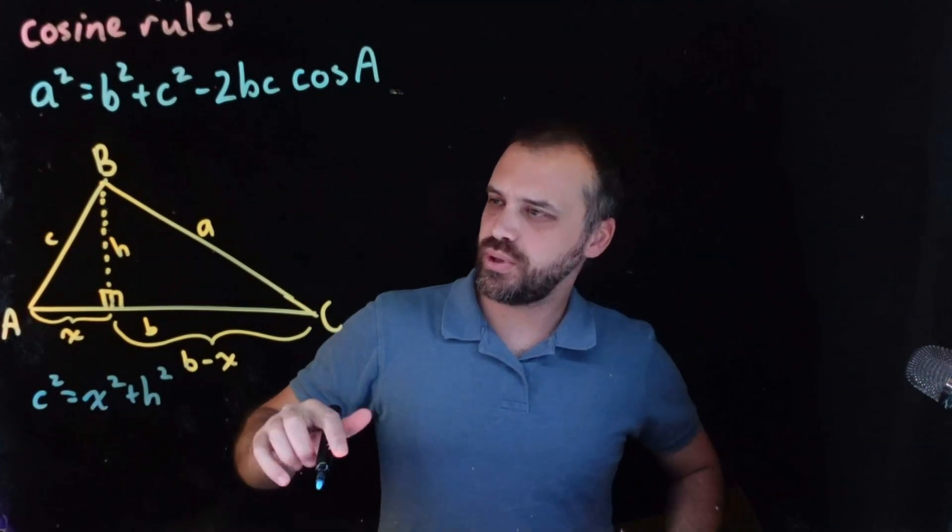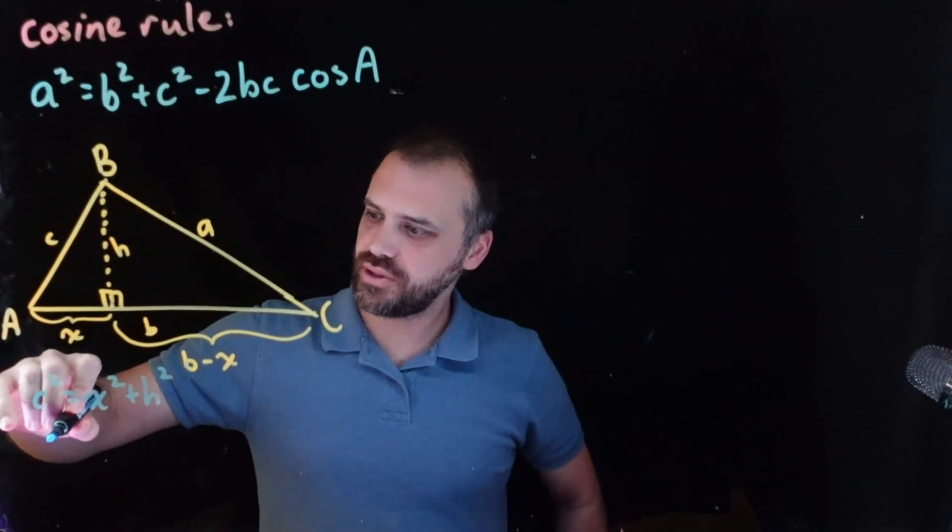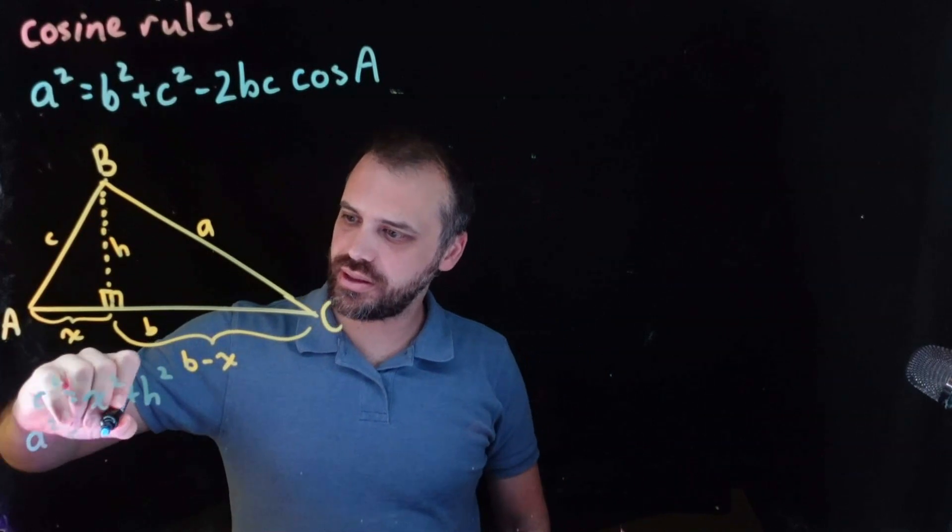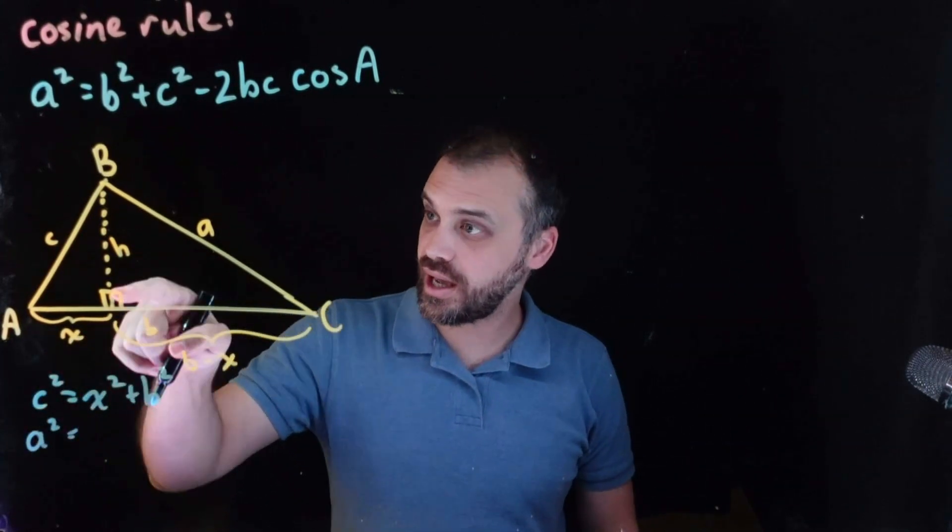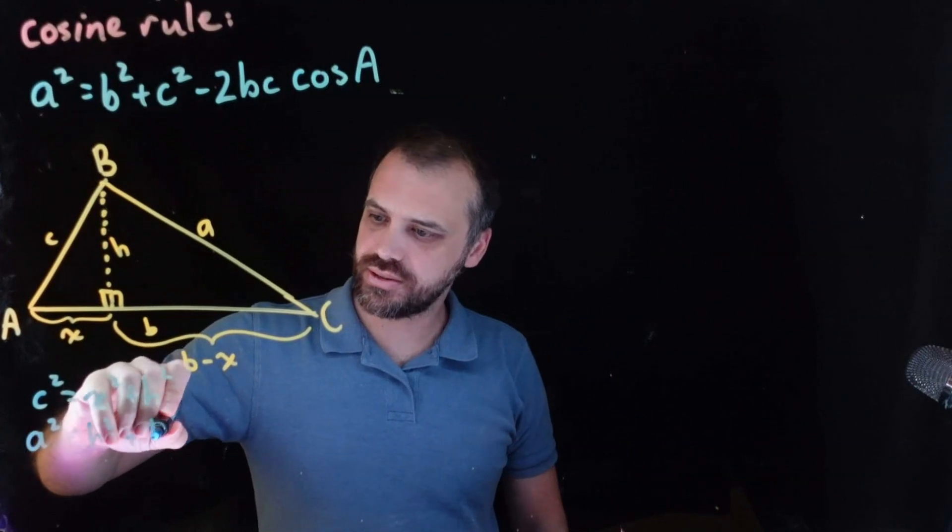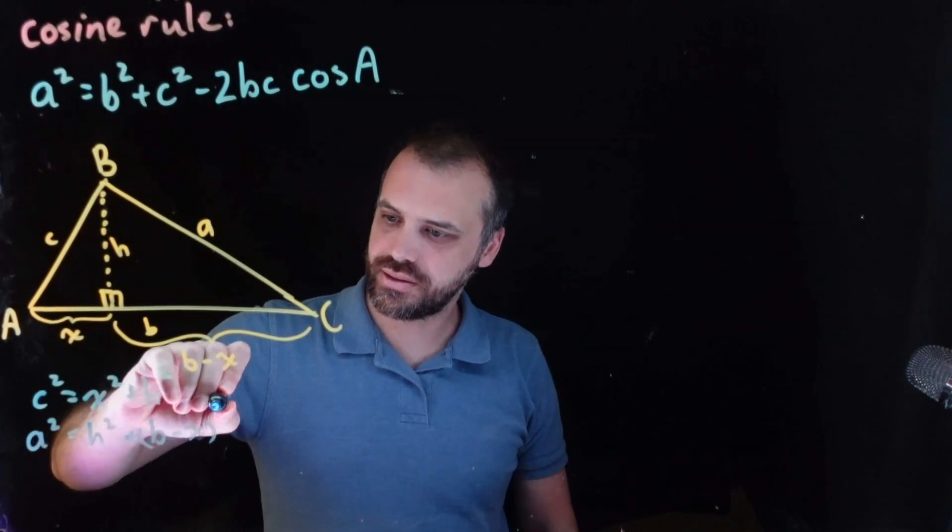That's going to be useful. We can say with our bigger triangle that A squared equals H squared plus B minus X squared.